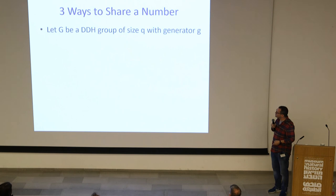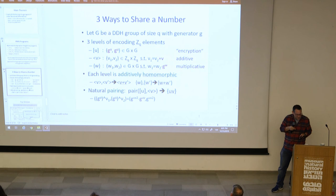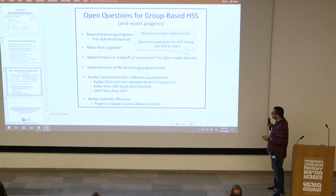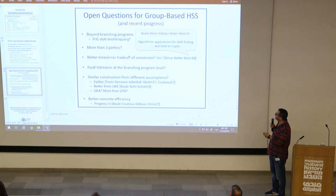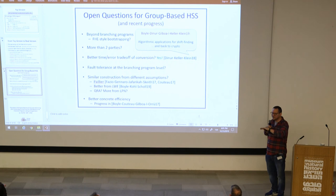Thanks for being patient. I want to mention the part I did not cover: the group-based or DDH-based construction, which involves an interesting notion of distributed discrete log. There is a beautiful work by Dinur, Keller, and Klein from last Crypto that gets an optimal protocol — a quadratic improvement over our work with Elette and Niv. We have a follow-up work with algorithmic applications of these cryptographic results that is independently interesting even if quantum computers exist. Ohad Klein will talk about it on Friday. Thanks.